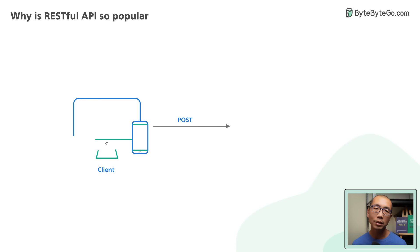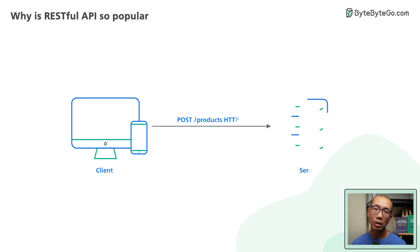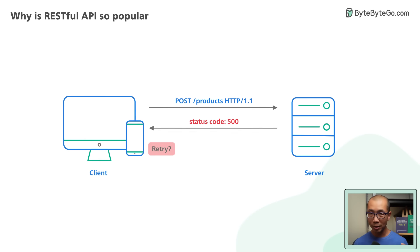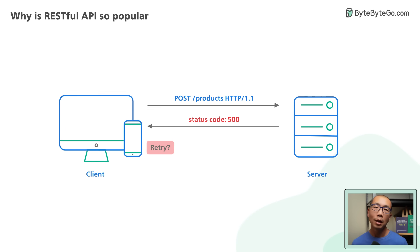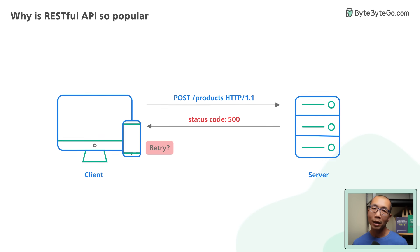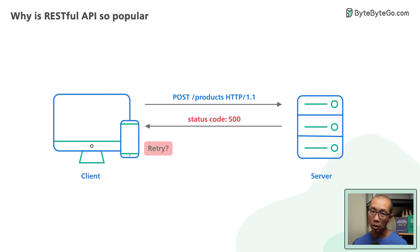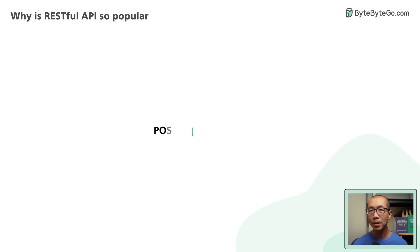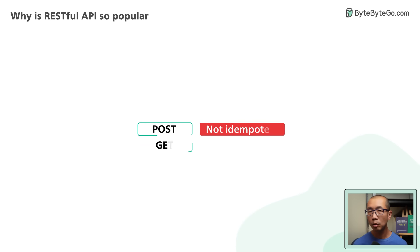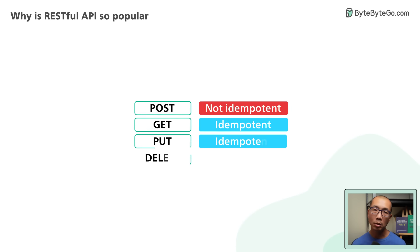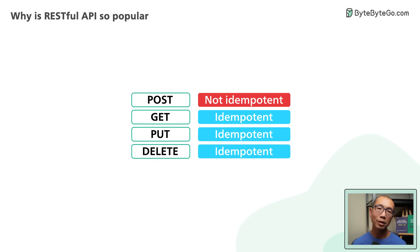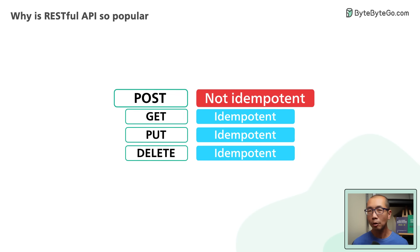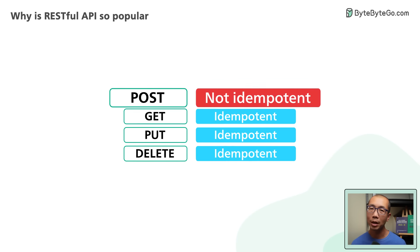A well-behaved client could choose to retry a failed request with a 500-level status code — though some actions are not idempotent and require extra care when retrying. When an API is idempotent, making multiple identical requests has the same effect as making a single request. This is usually not the case for a POST request to create a new resource.